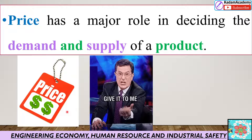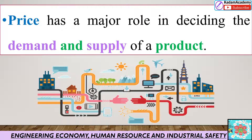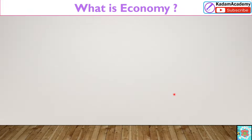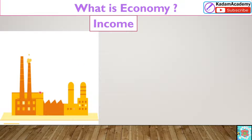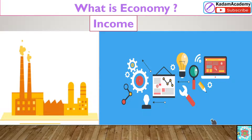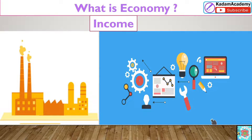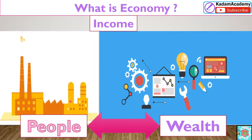Why are we coming to price? Because we are going to study engineering economy. Price is required to understand how demand and supply of a product works. This demand and supply depends on the requirement of the customer; according to that, a product is developed and supplied to the customer. Economy consists of the sum of all incomes from various industries that manufacture goods, produce goods, or give services to customers across various sectors. The sum of all incomes in a state or nation — this deals with the interaction between people and wealth. This is nothing but the economy.